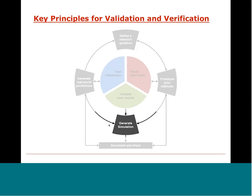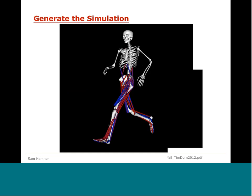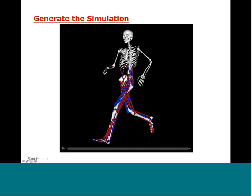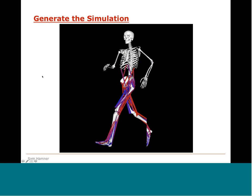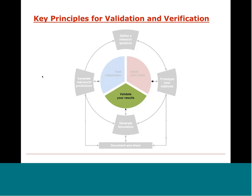Now we're at the point where you generate your initial simulation results. And surprise — it often doesn't work the first time. This is where the iteration comes in to make sure you understand your methods, fix bugs, verify again, maybe collect some more experimental data, and repeat the process until you have a simulation that at least looks like you would expect. Now the formal process of validation can begin.